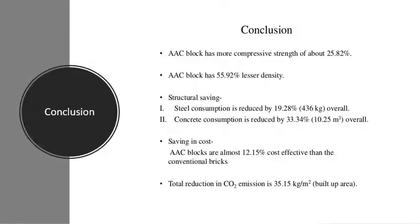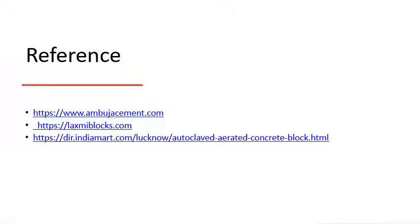Final conclusion: AAC block has more compressive strength of about 25.82%. It has lesser density; structural saving — steel consumption is reduced by 19.28% (36 kg). Overall concrete consumption is reduced by 33.34% (10.25 m³). Overall cost saving: AAC block is approximately 12.15% more cost-effective than conventional bricks. Total reduction in CO₂ emission is 35.15 kg per m² of built-up area. References: www.ambuja-cement.com, laxmi-blocks.com, indiamart.com.